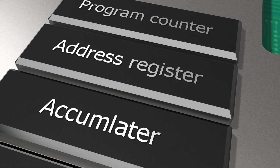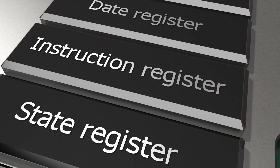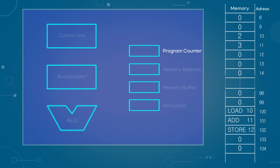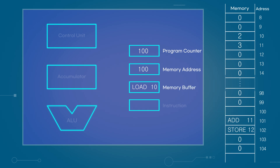Registers are crucial to understanding how the CPU operates. There are many types of registers, but we'll look at just a few. First, there is the program counter register, which holds the address of the next memory location to be executed. Next is the memory address register, which receives the address from the program counter, locates that address in memory, and retrieves the data. There is also the memory buffer register, which temporarily stores the data or instructions retrieved. Instructions are sent to the instruction register, and data used for operations is sent to the accumulator register. The accumulator register temporarily holds the results or intermediate values of calculations, and the final result is transferred to memory through the memory buffer register.